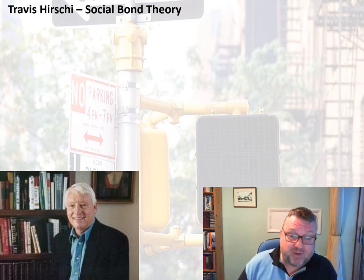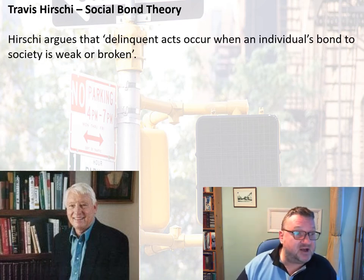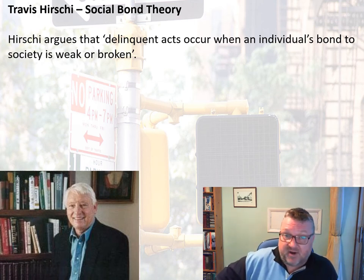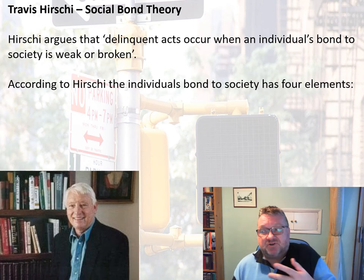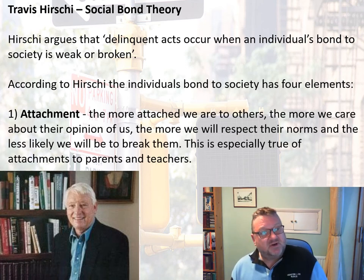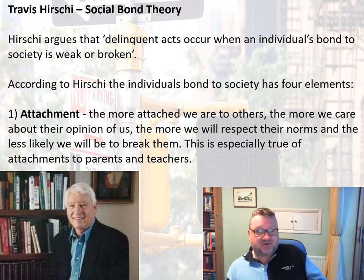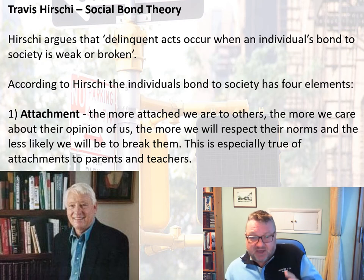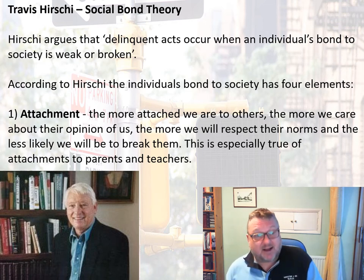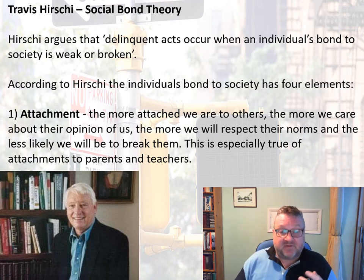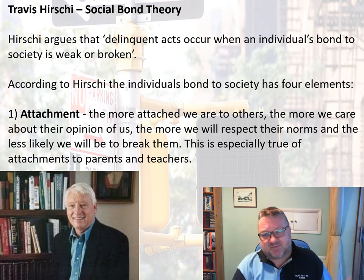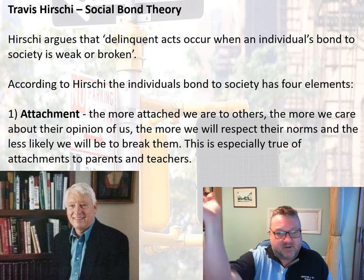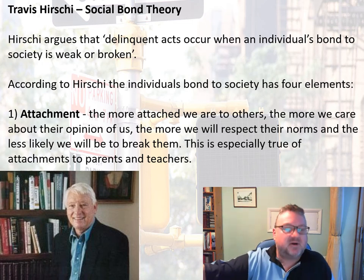Let's look at Travis Hirschi's social bond theory. Hirschi says that delinquent acts occur when an individual's bond to society is weak or broken. The bond has four elements. First is attachment: the more attached we are to others, the more we care about their opinion of us, and the more we are likely to respect their norms and less likely to break them. This is especially true of attachments to parents and teachers — for example, 'I couldn't do that because it would upset my mum' or 'my teacher would be so disappointed.'